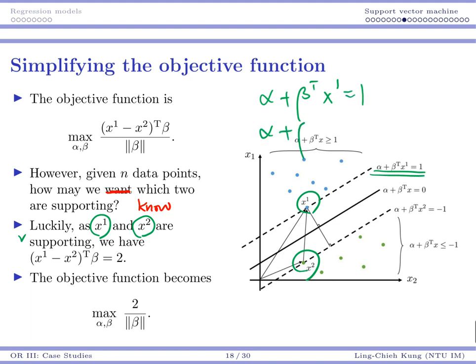And for x2, you are going to get negative 1. So actually, for your numerator, once you do this, it's going to be beta transpose x1 minus beta transpose x2. And if you do the subtraction here, you see this value is always 2.